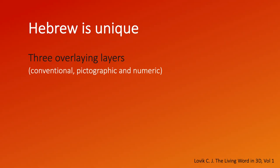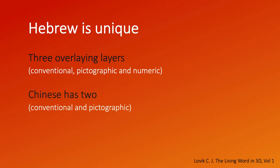It is unique — it is the first language given to man. And why is it unique? It's unique because it has three overlapping layers: it's conventional, like the words you see on the page; but it's also pictographical; and it's also numeric. Chinese has two — conventional and pictographical. Greek also has two — conventional and numeric, built into their alphabet characters. Hebrew is unique because built into the alphabet are all three layers of information.